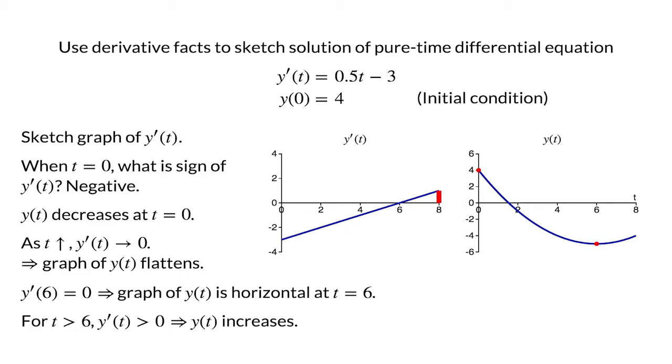We end up with a graph of y(t) that starts at 4, decreases until t equals 6, and then increases. This graph represents the solution of our pure-time differential equation.